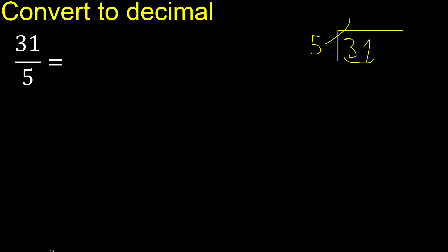5 multiplied by 7 is 35, which is greater. 5 multiplied by 6 is 30, which is not greater. 31 minus 30 is 1. Next.